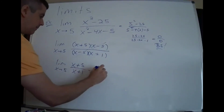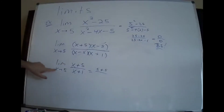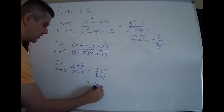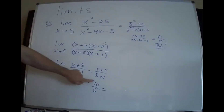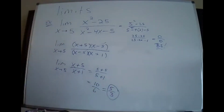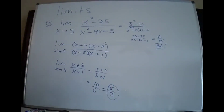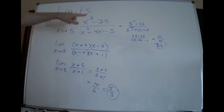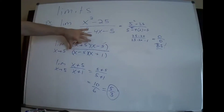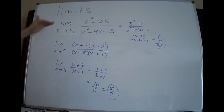The problem's over — plug 5 into the top. Notice I'm not writing 'lim' anymore because I'm evaluating it now. 5 plus 5 is 10, and 5 plus 1 is 6. They're both even, so cut them in half — I expect you to reduce. You're in calculus; you can tell me what 10 over 6 is. 5 over 3 is your answer. So: technique one — plugged in, didn't work, got zero over zero. Factored top, factored bottom, crossed out the troublesome common factor, plugged in, and it's over.